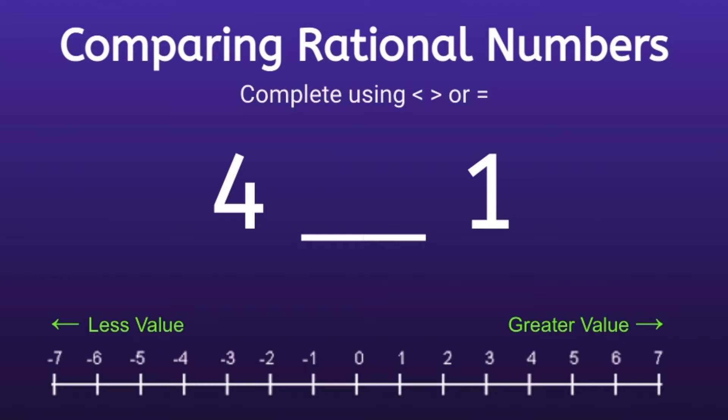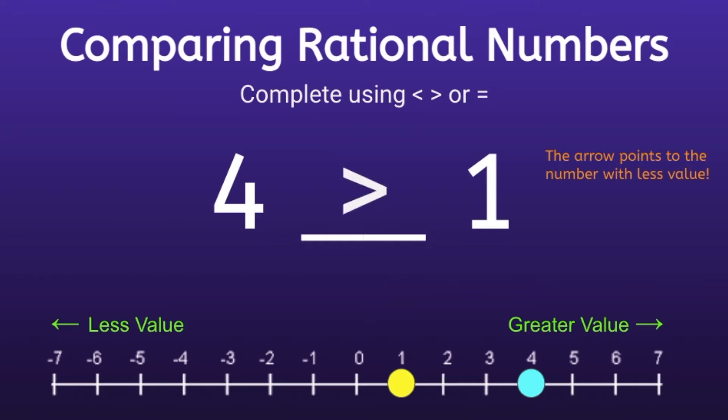For the first example we have the numbers 4 and 1. So let's graph those on the number line. Now that we have them on the number line we can see that the number 1 is further to the left, which means it has less value. We want to use those inequality signs to show which number has less value, and the arrow is always going to point to the number with less value. So in this example the arrow would point to the right since 1 has less value than 4.